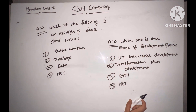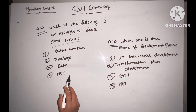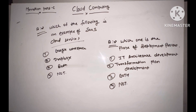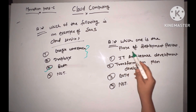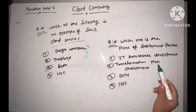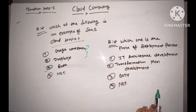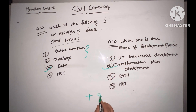Next: which of the following is an example of SaaS cloud service — Google Workspace, Dropbox, both, or none? The answer is both. Next: which one is a phase of the deployment process — IT architecture development, transformation plan development, both, or none? The answer is transformation plan development. Plus two for those who answered correctly.